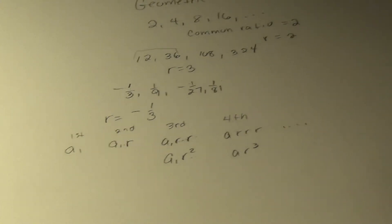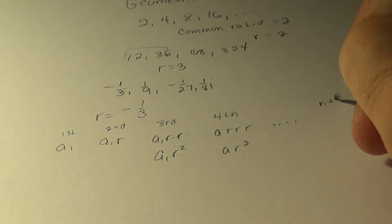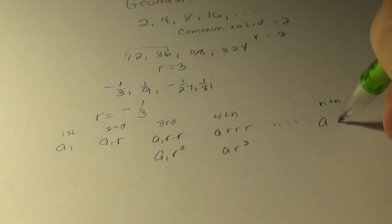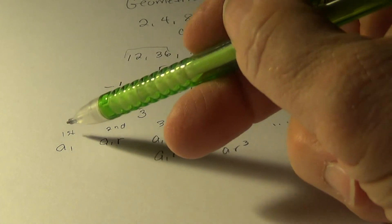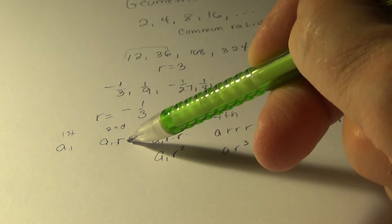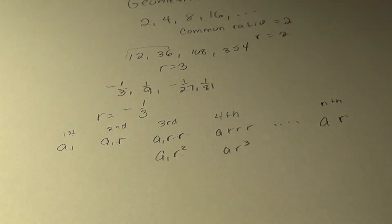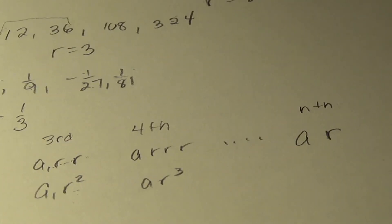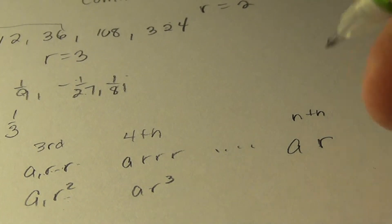If we take that out to the very nth term, what patterns do we see? There's an A in each one. And how many R's? Well, in the first one there was no R's. On the second there was one. On the third there was two. On the fourth there was three. So on the nth one, there's going to be one less than the number term. So it's to be to the n minus one.